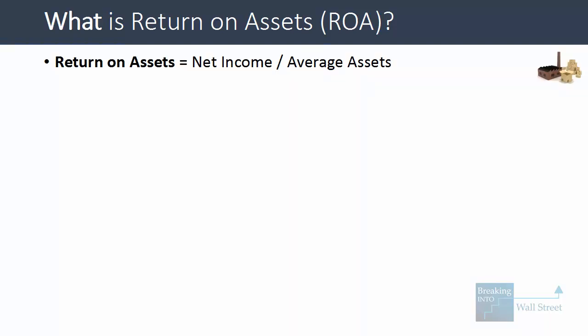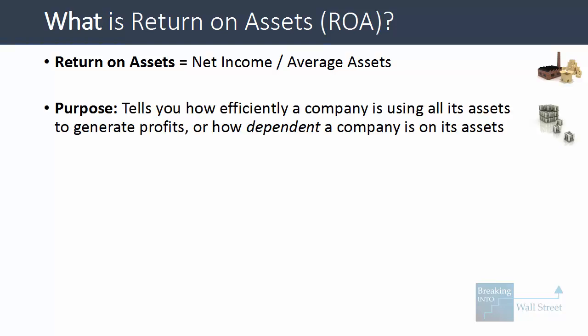Return on assets is defined as a company's net income over its average assets over a certain period. So you take net income over the course of a year, take assets at the beginning and end of the year, average them, and use that in the denominator. It tells you how efficiently a company is using all its assets to generate profits — you can think of it as a company using a portion of its assets to generate profits in a given period.